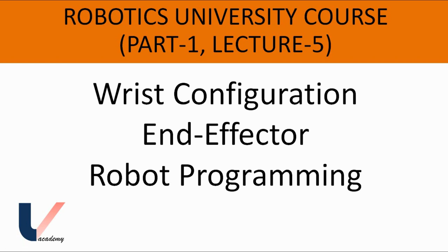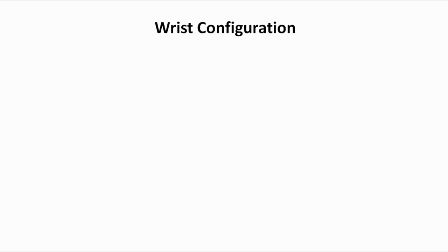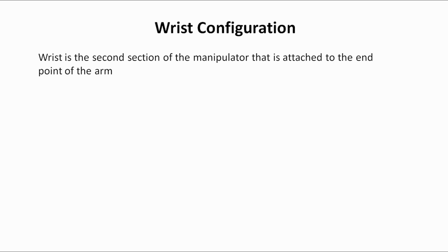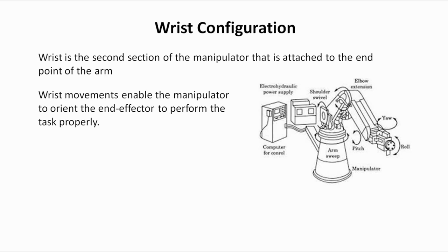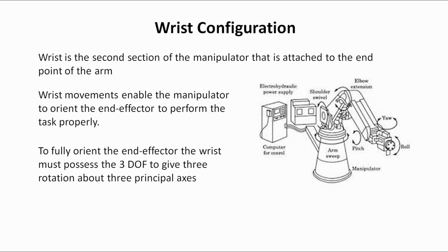Let's start with the wrist. The arm is the first section of the manipulator and the wrist is the second section. The wrist is attached at the end of the arm. The wrist is used to orient the end effector in 3D space. For orientation in any way in 3D space, the wrist requires three degrees of freedom.